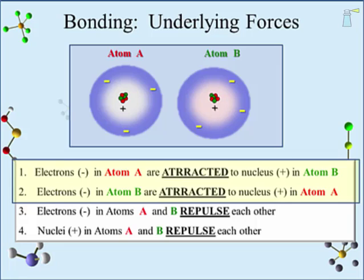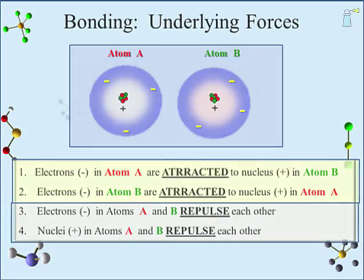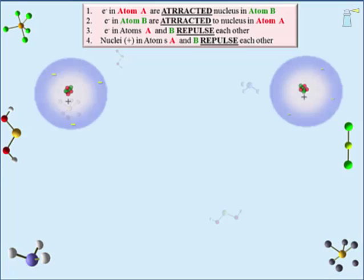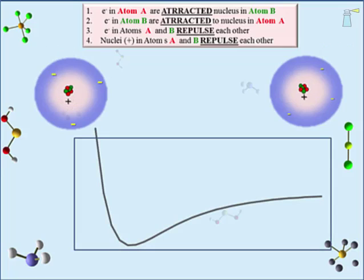Bonding is a competition between the forces of attraction and the forces of repulsion. Opposite charges bring atoms together and like charges push atoms apart. However, bonding is not simply a matter of attraction forces being greater than repulsion forces. Because of the construction of the atom, the forces of attraction and repulsion change with the distance between the atoms. To understand bonding, we need to see how these forces change as atoms approach each other.